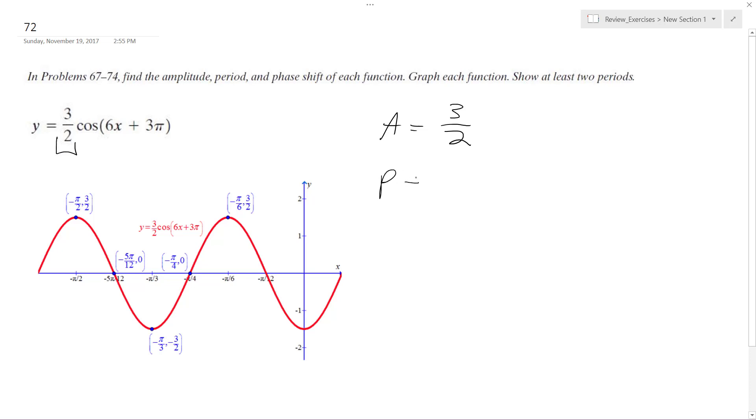The period is going to be 2 pi divided by omega, which is going to be equal to 2 pi divided by the coefficient in front of x, which is 6. So the period is pi over 3.